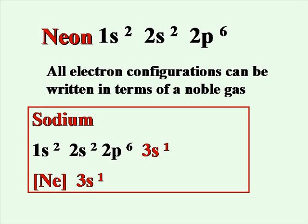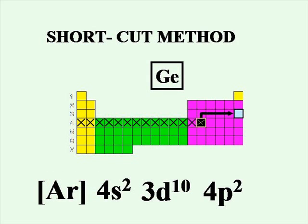All electron configurations can be written simply in terms of a noble gas. This is called the shortcut method. In the shortcut method, we use the previous noble gas. We place it in brackets to represent all the electrons up to that point. Then we simply add the additional electrons to give us the element in question. For example, germanium is argon plus the additional 4S2, 3D10, and 4P2 electrons.